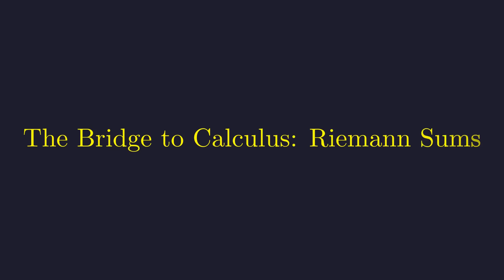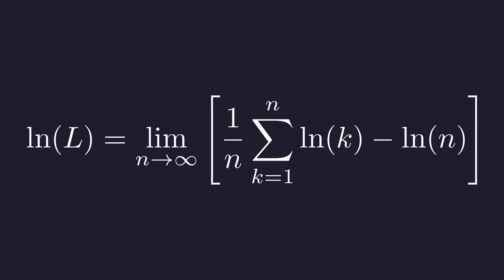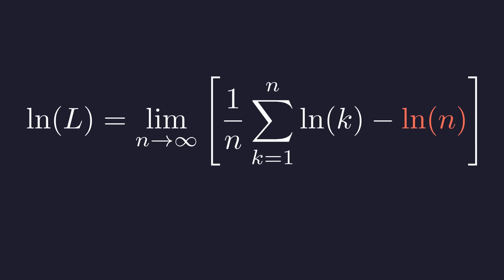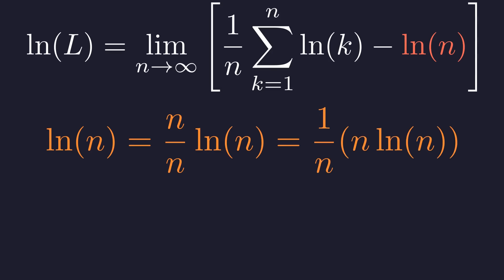Now, let's substitute this sum back into our limit expression. This is where the transition to calculus happens. We now have this form. Our goal is to make it look like a Riemann sum, which requires a term of the form k over n inside the function. To get there, we need to cleverly rewrite the natural log of n term so it can be combined with the first summation. We can multiply the natural log of n by 1 in the form of n divided by n. Then we rearrange the terms.